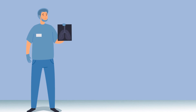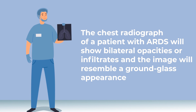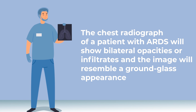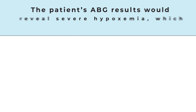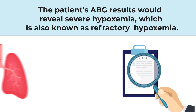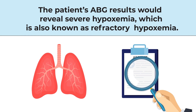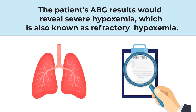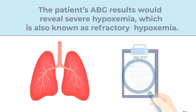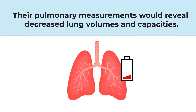The chest radiograph of a patient with ARDS will show bilateral opacities or infiltrates, and the image will resemble a ground glass appearance. The patient's ABG results would reveal severe refractory hypoxemia, and their pulmonary measurements would reveal decreased lung volumes and capacities.